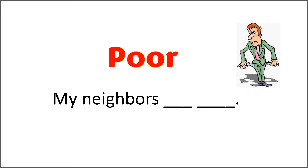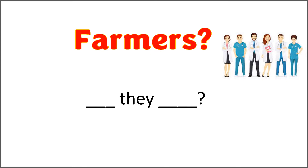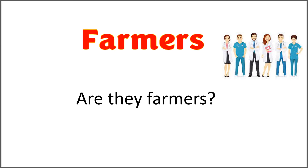The next word is 'poor.' My neighbors blank blank. Use the word 'poor' with 'are' to complete the sentence. You can write the answer in the comment section. My neighbors are poor. The given word is 'farmers' and the sentence is 'blank they blank.' Use 'are' with 'farmers' to ask the question. And the correct answer is: are they farmers?